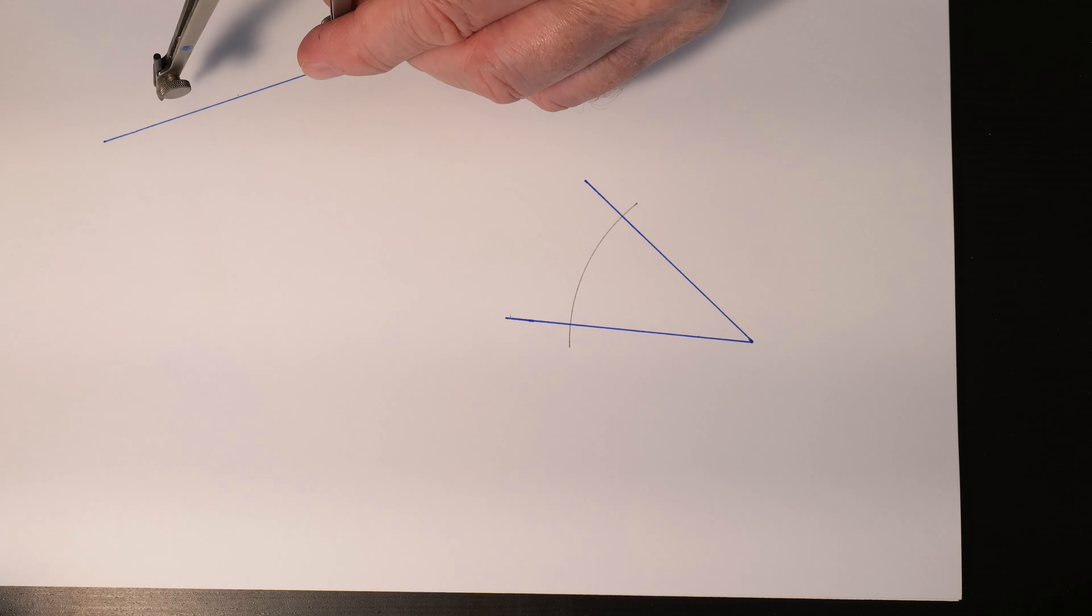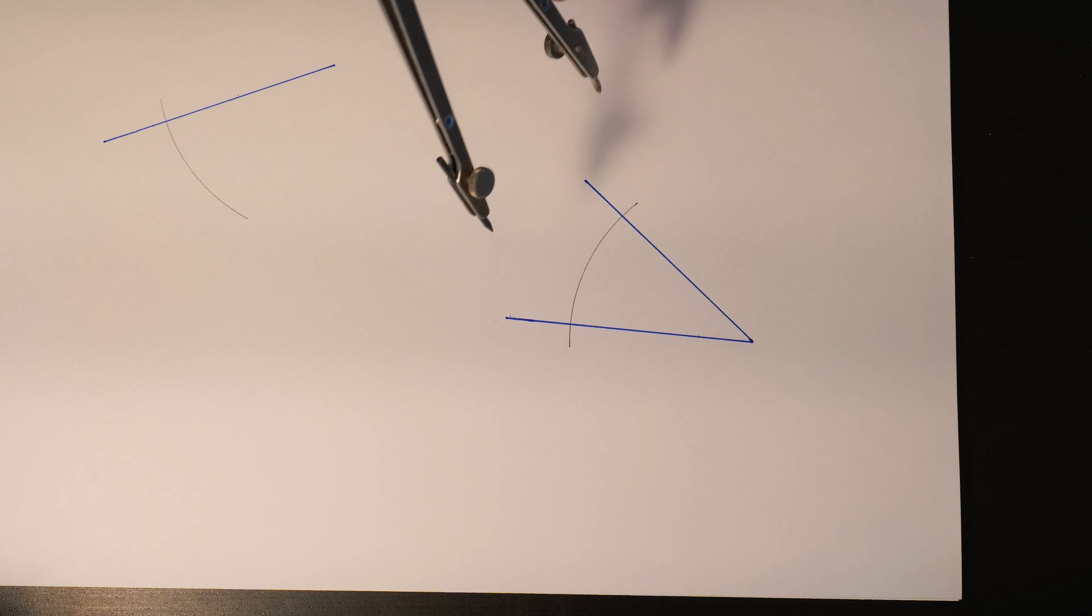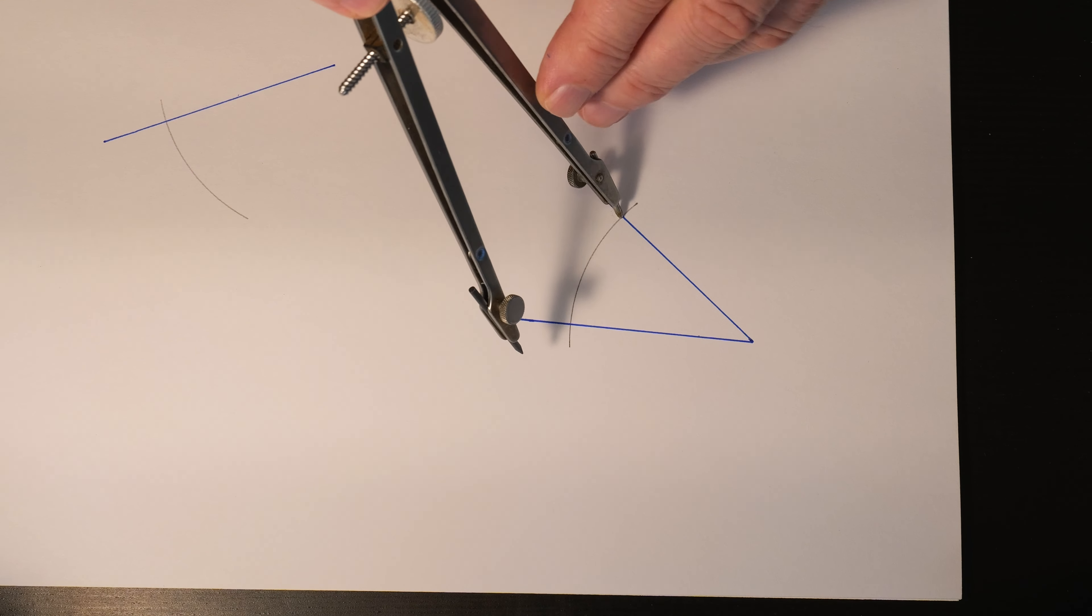You're going to take that same measurement, put it on the endpoint of the line where you want to duplicate that angle, and draw another arc. Then you're going to come over and set the distance between those two intersecting points on your original angle.